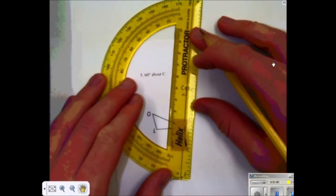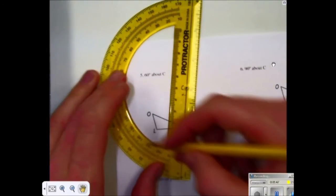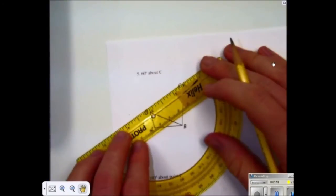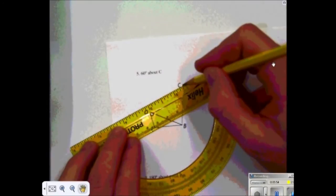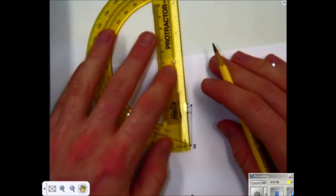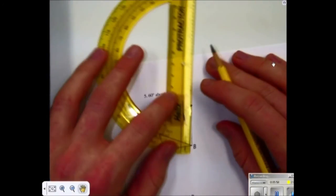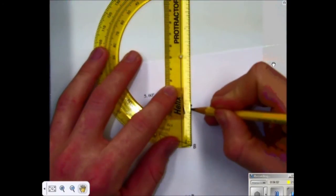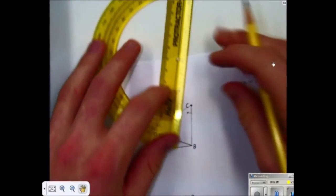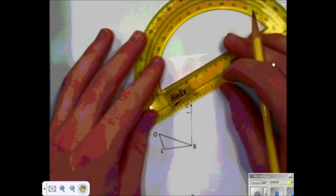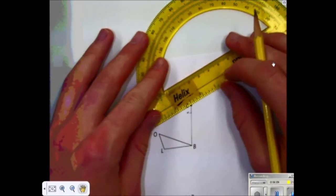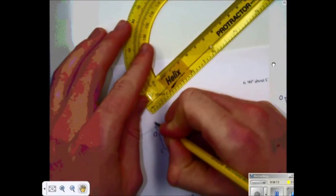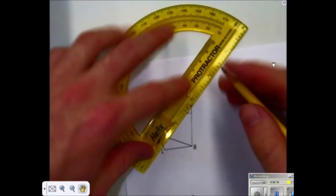So I'll be using, this time I'll be using the outside numbers, 60. Draw the line in longer than I need. Measure this length. And I get 5, 1 and 5 sixteenths. So I'll go 1 and 5 sixteenths. And this is the point B prime.